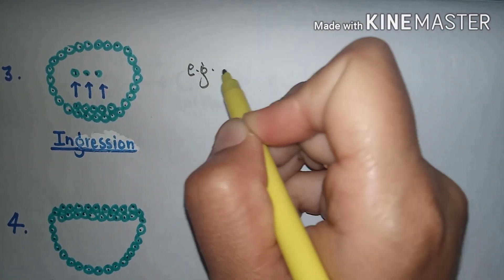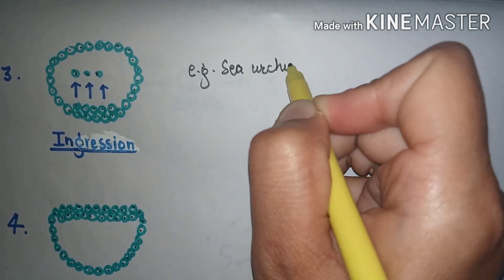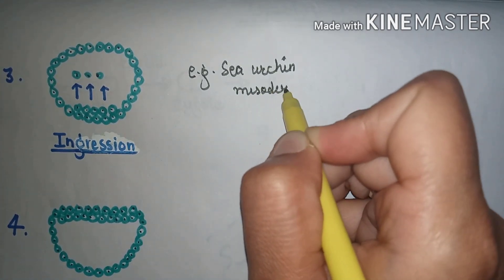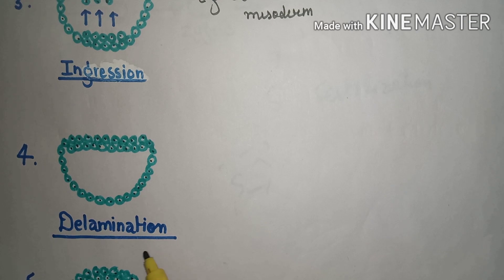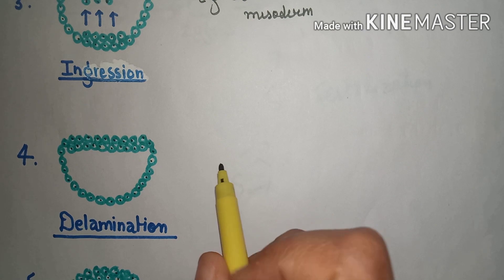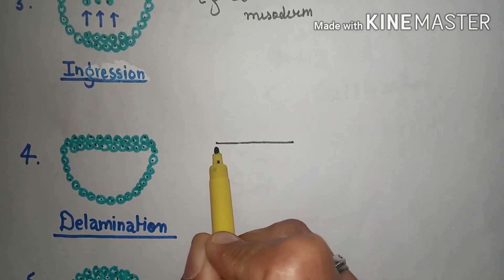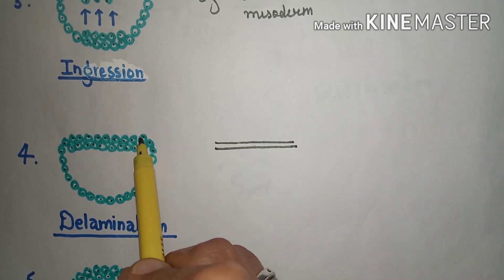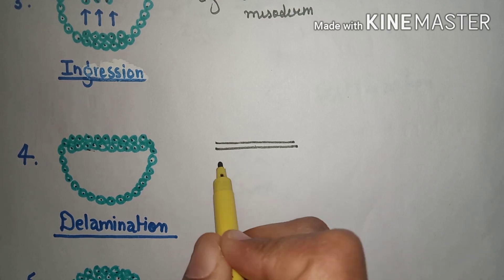An example of ingression is the sea urchin mesoderm. The fourth type of cell movement is known as delamination. In delamination, one layer gets split into two layers — when one germ layer gets split into two layers, it is known as delamination.